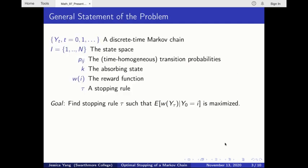I will now introduce the general statement of the problem. Let y sub t be a discrete time Markov chain with state space i and time homogeneous transition probabilities pij. Let k denote the absorbing state, let w be the reward function, and let tau denote a stopping rule that prescribes a time to stop the Markov chain.